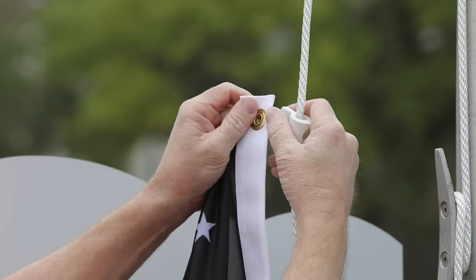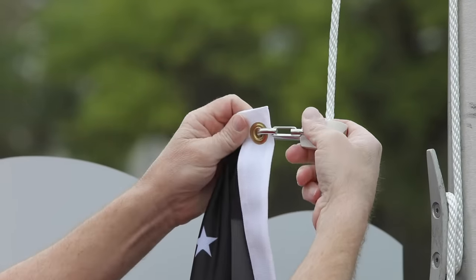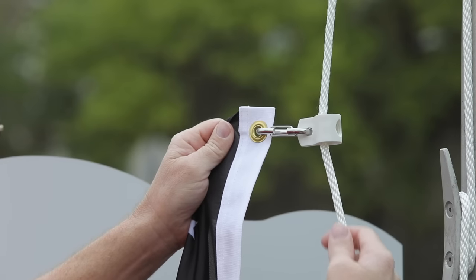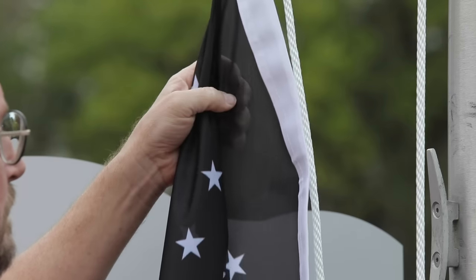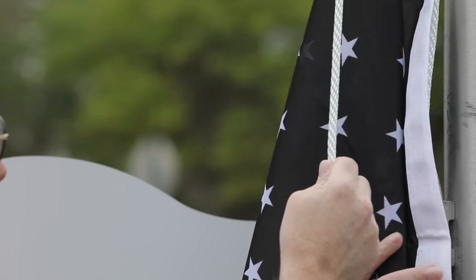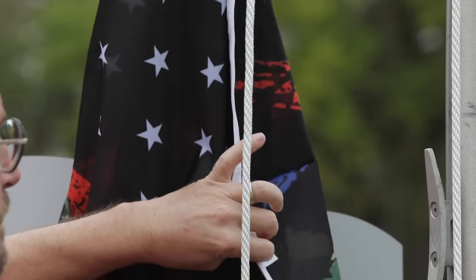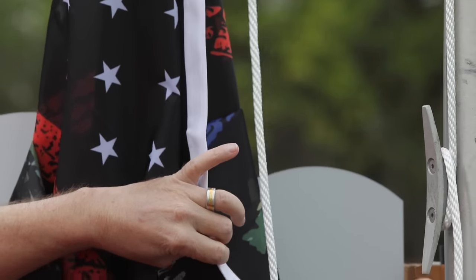Attach the top edge of the flag grommet to the newly installed zip clip. Before working on the second zip clip, ensure the flag will not touch the ground. If needed, untie the halyard from the cleat, raise slightly, and retie to the cleat.